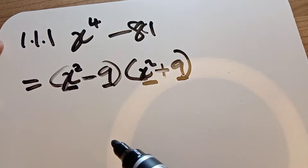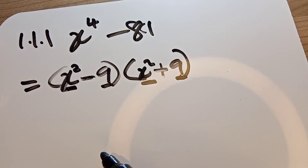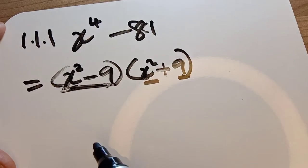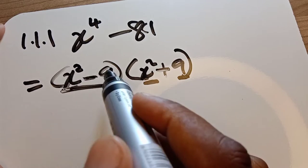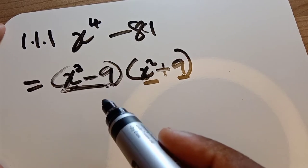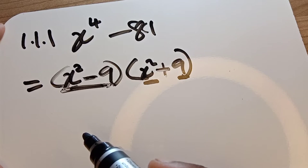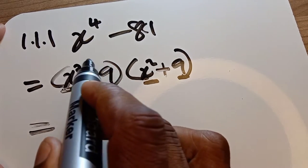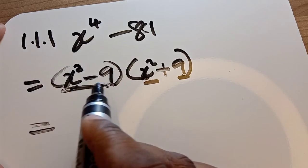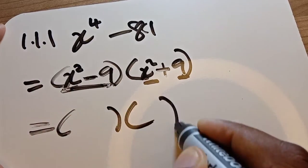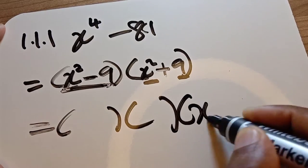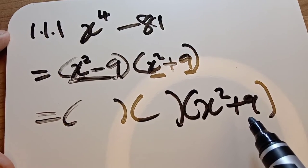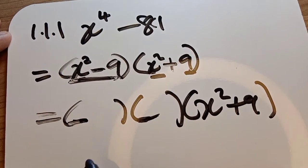But they said we must factorize fully. Even here we are still having a difference of two squares because we have the difference, and 9 is a perfect square — when you put it under the square root you get 3. So we can further factorize this. We need two binomials for this bracket, and this one — the sum of squares — you cannot factorize, so we leave it as it is.